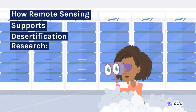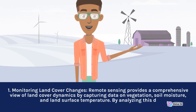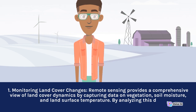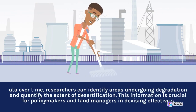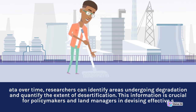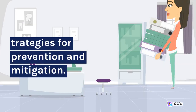How Remote Sensing Supports Desertification Research. 1. Monitoring Land Cover Changes: Remote sensing provides a comprehensive view of land cover dynamics by capturing data on vegetation, soil moisture, and land surface temperature. By analyzing this data over time, researchers can identify areas undergoing degradation and quantify the extent of desertification. This information is crucial for policymakers and land managers in devising effective strategies for prevention and mitigation.